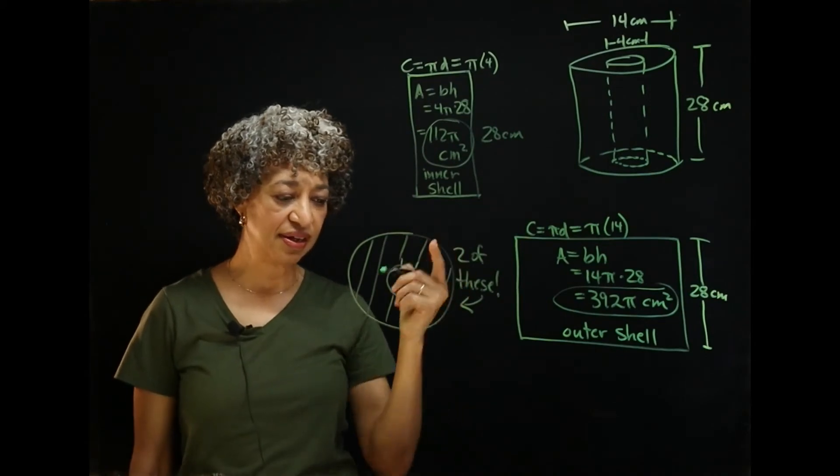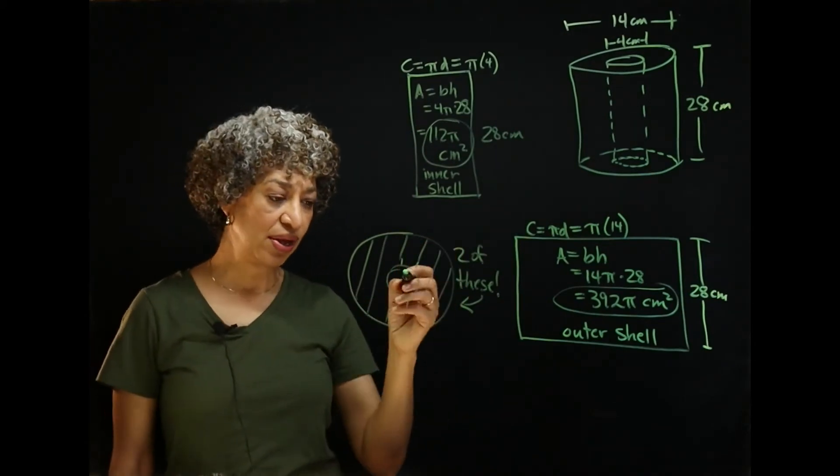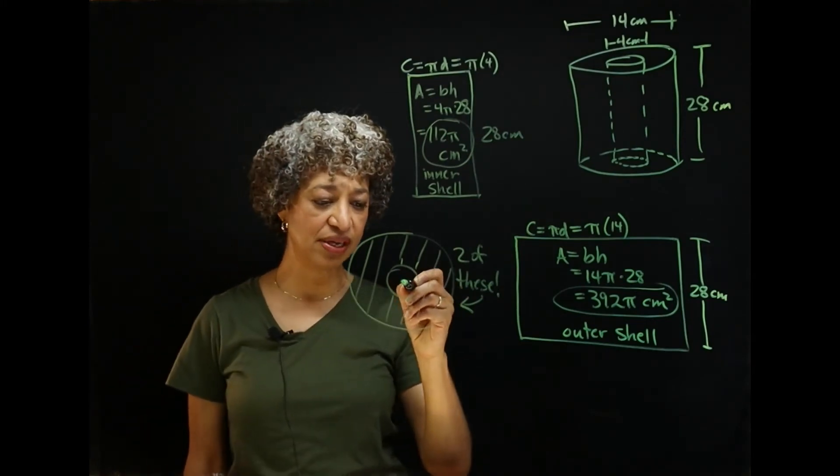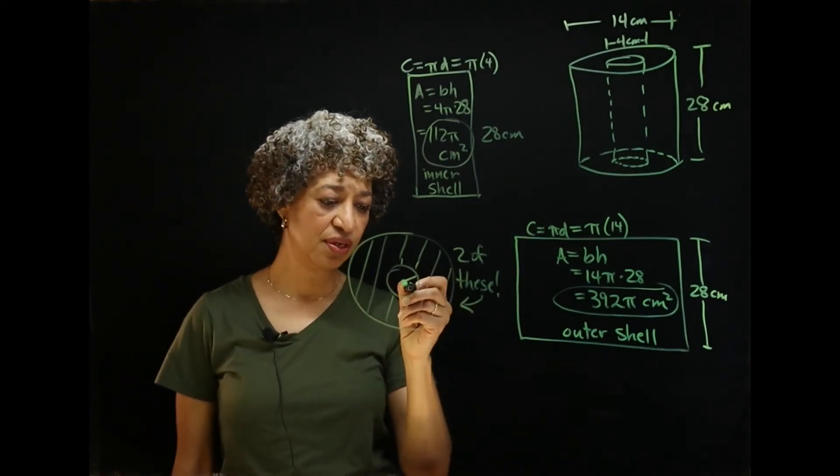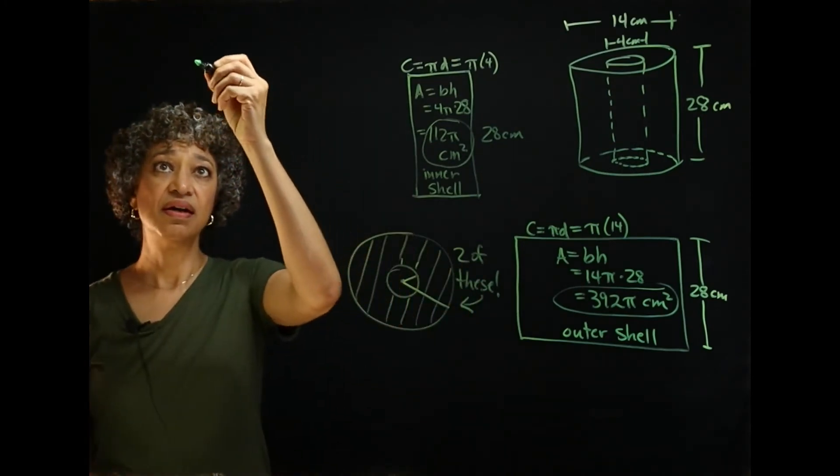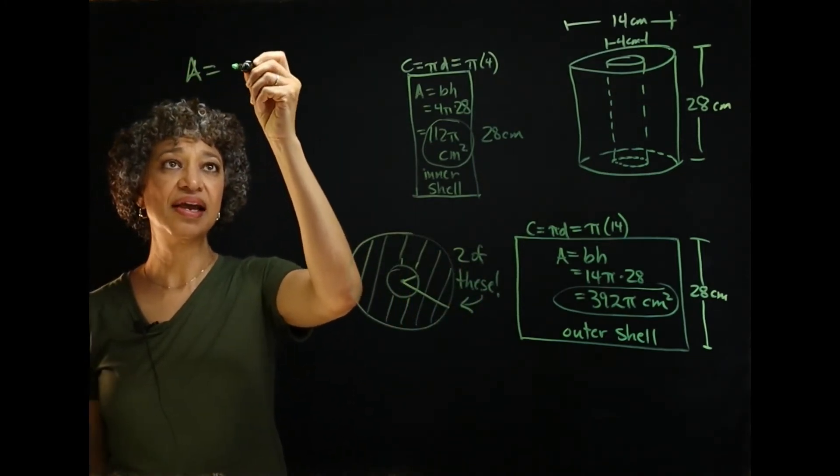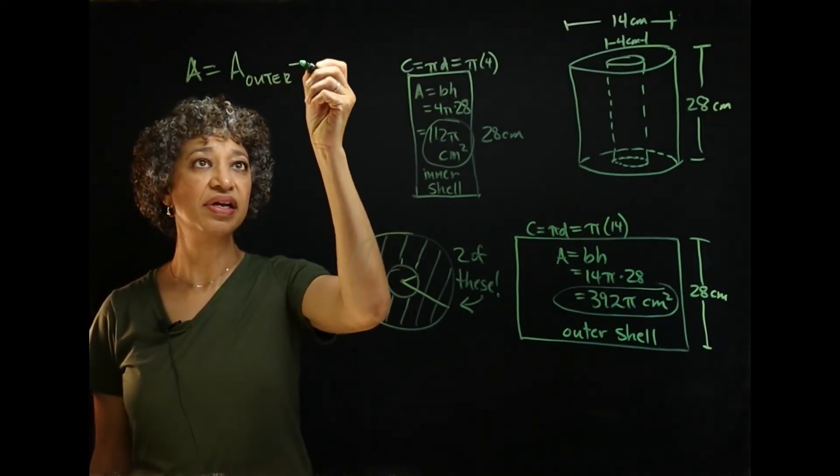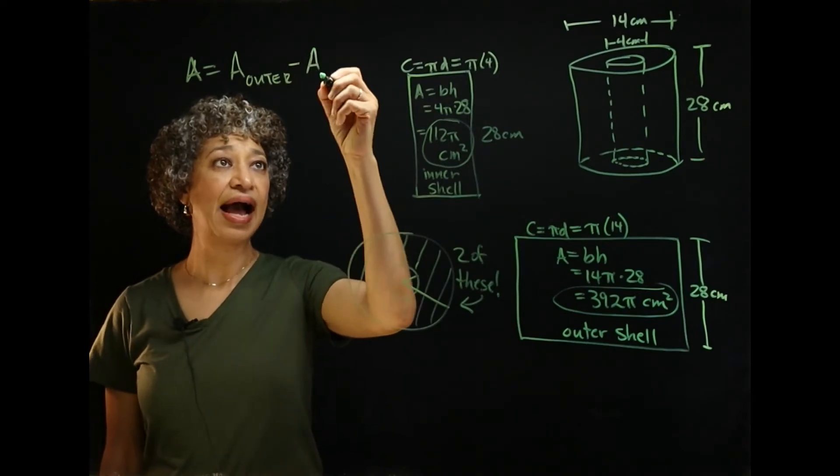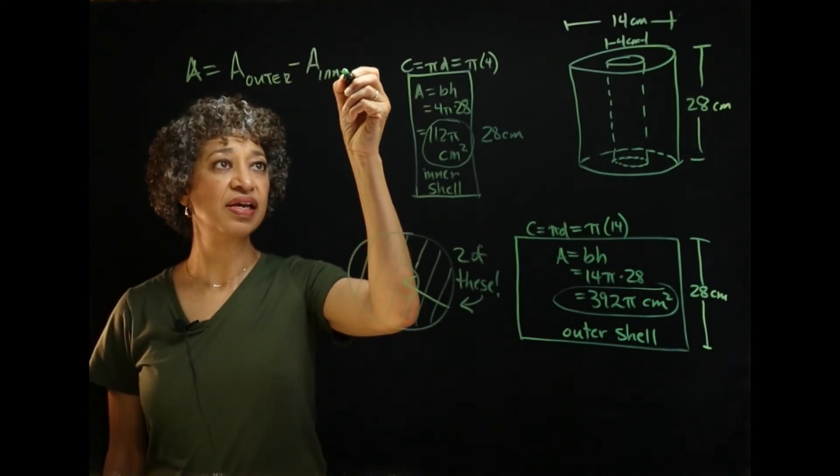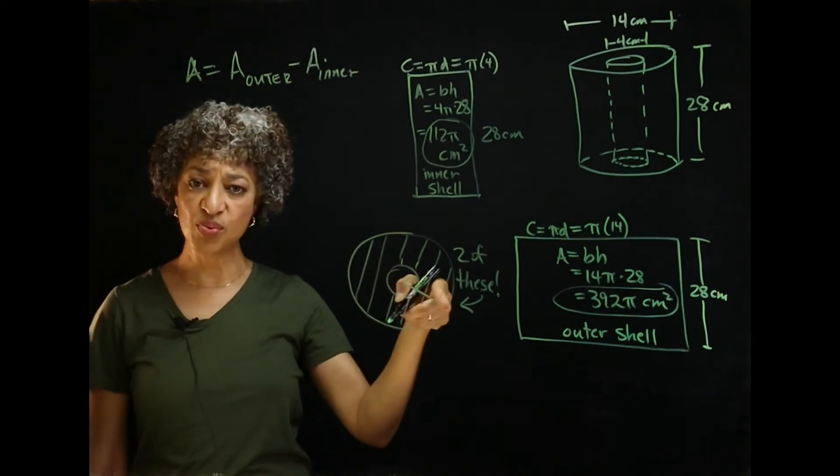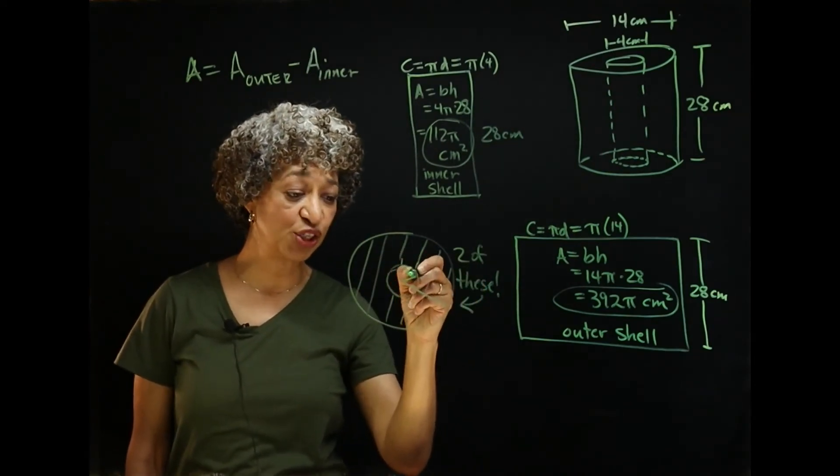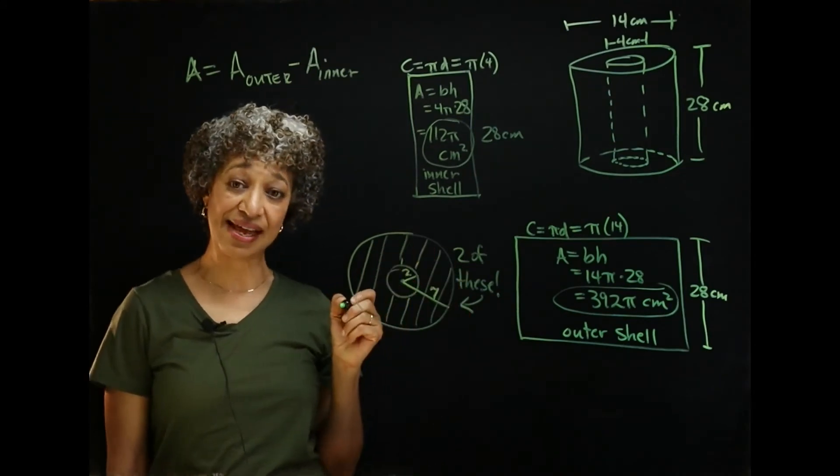All right. How do you find the area of an annulus? Well, whenever we want to find the area between two figures, we subtract the area of the inner from the area of the outer. So, area of the outer minus area of the inner. Now, in this case, we're dealing with two circles. The inner circle has radius 2. And the outer circle has radius 7.